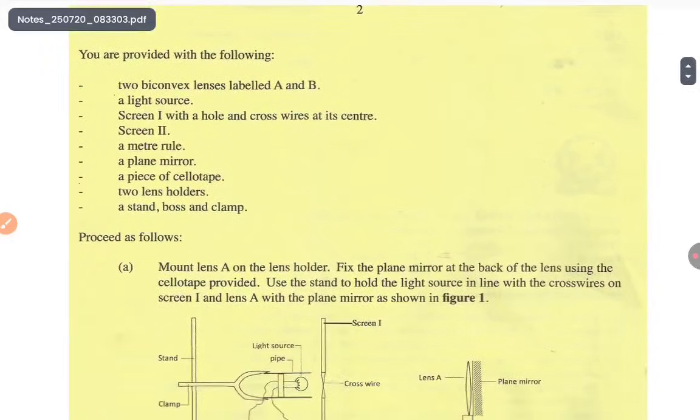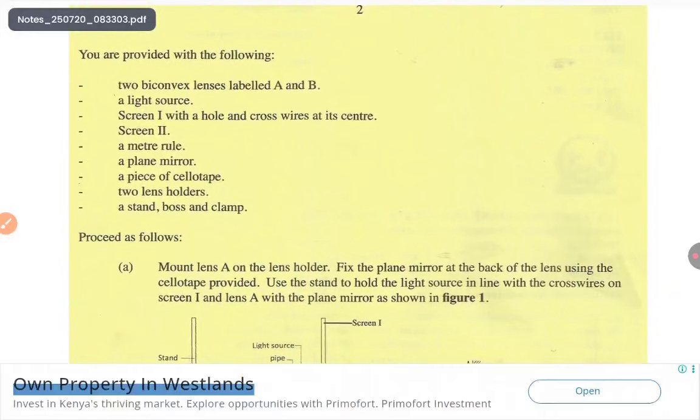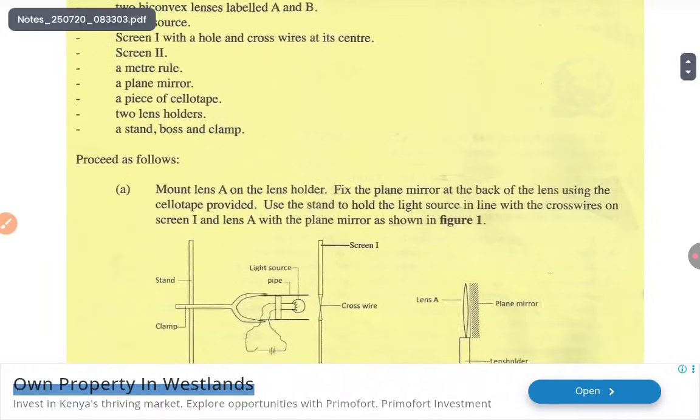You are provided with the following: two biconvex lenses labeled A and B, a light source, screen one with a hole and cross wire at the center, screen two, a plane mirror, a piece of cellotape, two lens holders, a stand, boss and clamp. Then procedure one, proceed as follows.